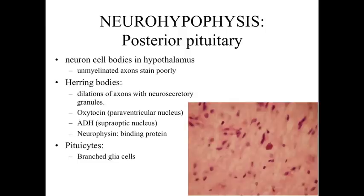We still see nuclei within the posterior pituitary, and these are pituitocytes — special branched glial cells that surround and support the axons and axon processes associated with the cells within the posterior pituitary.